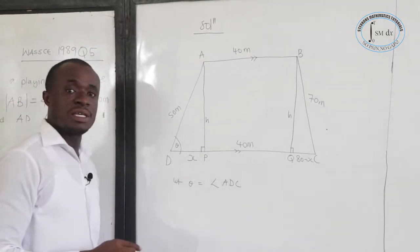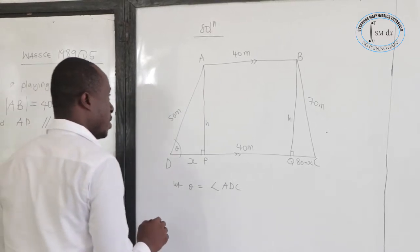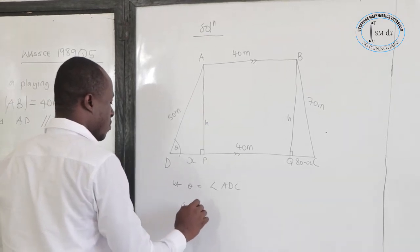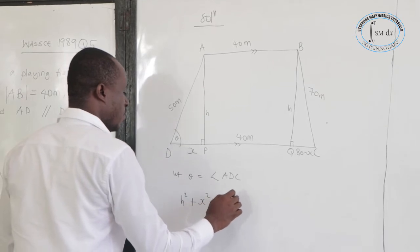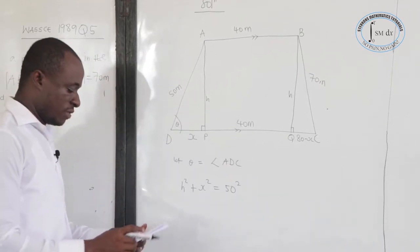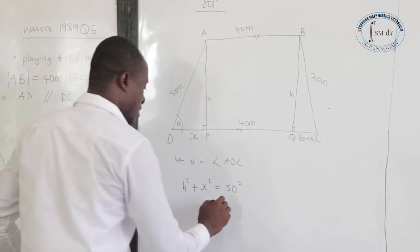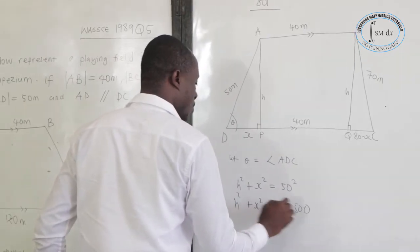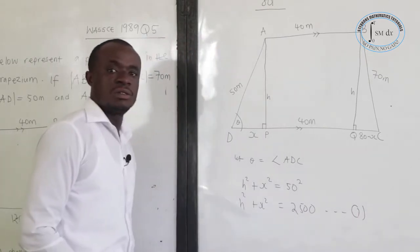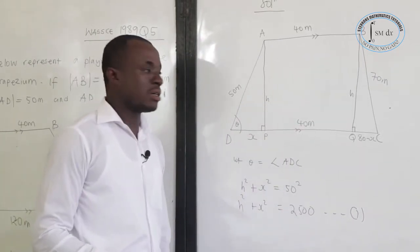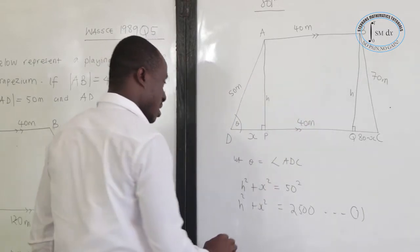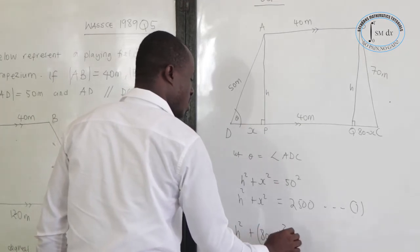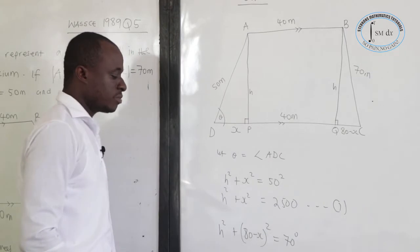Triangle APD is a right angle triangle. Using Pythagoras theorem, H squared plus X squared equals 50 squared, which is 2,500. Let's call this equation 1. Now for the other right angle triangle, H squared plus (80 minus X) squared equals 70 squared.